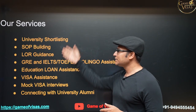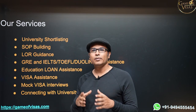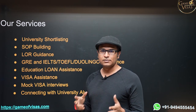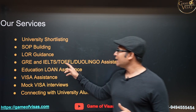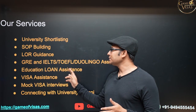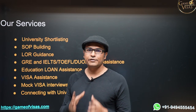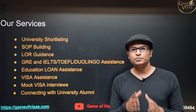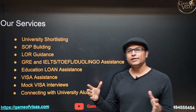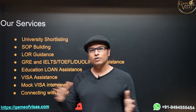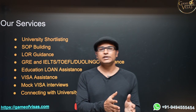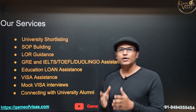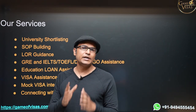These are all the services we provide: university shortlisting based on your profile, statement of purpose building, LOR guidance, GRE and English test assistance, and education loan assistance. You don't need any collateral — you can get an education loan without any security. Depending on your budget, you can apply to universities with fees ranging from 10 lakhs to 50 lakhs and get a complete education loan, which you can pay off in one year after getting a job.